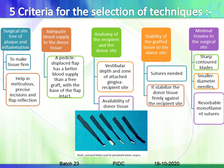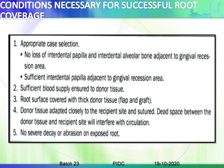Criterion 5: minimal trauma to the surgical site, achieved using sharp contoured blades, small-diameter needles, and resorbable monofilament sutures. For successful root coverage, appropriate case selection is essential; there should be no loss of interdental papilla or intra-alveolar bone adjacent to the recession area, sufficient blood supply must be ensured to the donor tissue, the root surface should be covered with a thick donor tissue flap, and there should be no severe decay, abrasion, or exposed root issues.